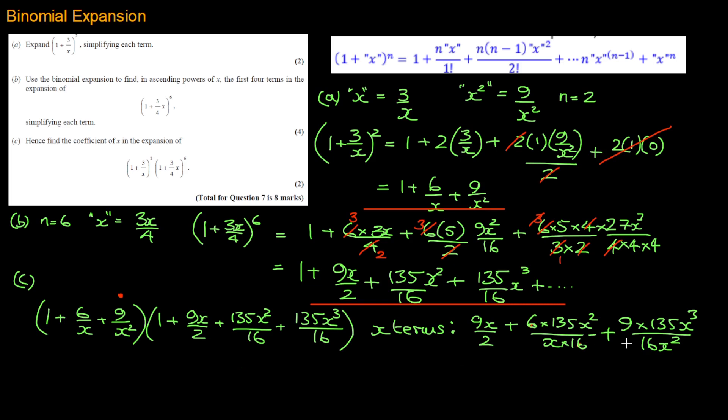We can either go down the decimal road and work out the coefficient of all of these, or stay in the fractional mode, where I suggest you multiply both top and bottom here by 8. So if we go down the fractional mode, I get 72x over 16 plus 6 times 135, and this is 810 over 16x again, plus 9 times 135 which is 1215x over 16.